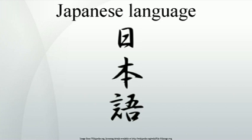The standard dialect moved from the Kansai region to the Edo region in the early modern Japanese period. Following the end in 1853 of Japan's self-imposed isolation, the flow of loanwords from European languages increased significantly. English loanwords in particular have become frequent, and Japanese words from English roots have proliferated.